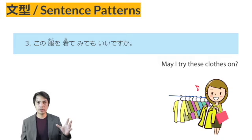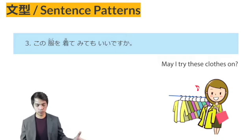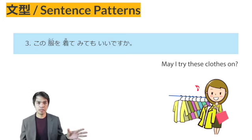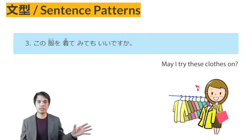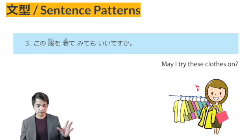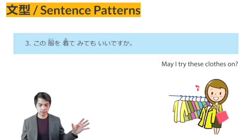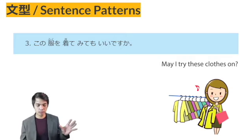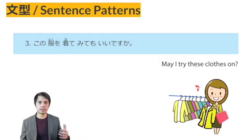The Verb TE MIMASU — KONO FUKU WO KIMASU means 'to wear these clothes.' KITE MIMASU means 'try to wear.' So the verb TE MIMASU means 'try to do an action.' Then KITE MIMASU is used for the pattern Verb TE MO II DESU KA to ask permission. KITEMITEMO II DESU KA — can I try this on, or can I try on these clothes?